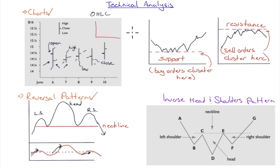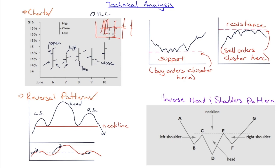OHLC charts are useful for revealing intraday volatility that might be hidden if you only look at closing prices. A stock might appear to have low price variability day-to-day, but OHLC bars might show it opens and closes near the same price while swinging hugely intraday — making it appear low-volatility when it's actually very volatile. Visually, a predominance of green bars indicates a rising stock.